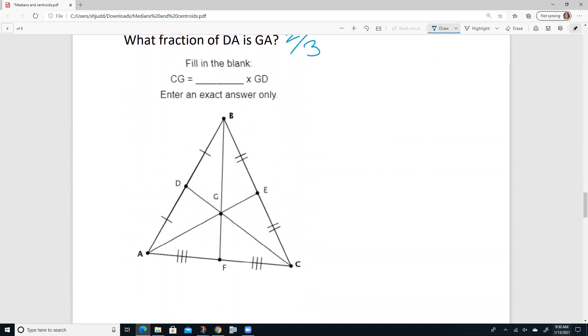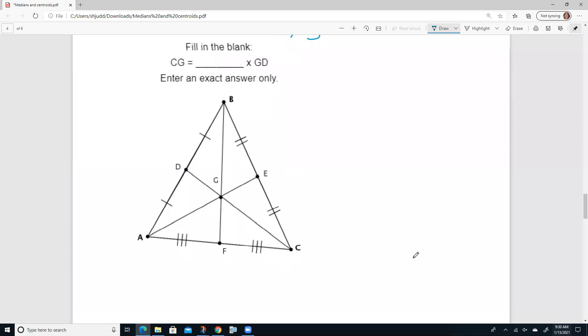Go ahead and work an example. It says fill in the blank. CG, where is CG? CG is right here. And GD right here. Okay, how many GDs would we need to make up CG? We need two of them.